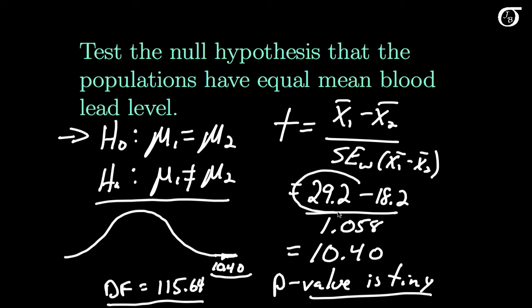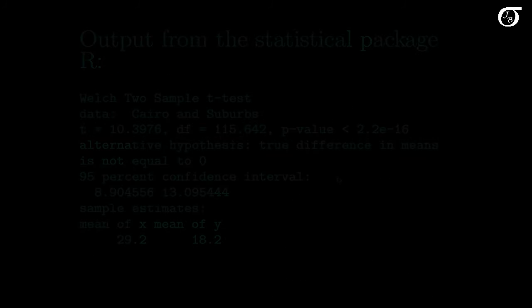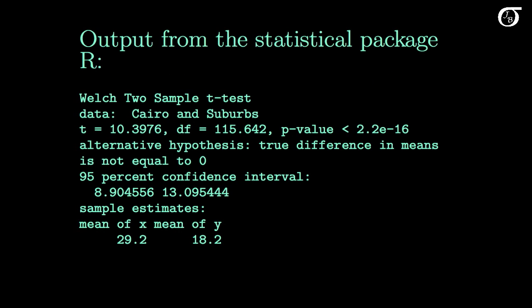So it looks like there is a real difference: the Cairo traffic officers have a greater population mean blood lead level than those from the suburbs. As I've said before, this is typically best done using a computer — let the computer do all the calculations and let us focus on the proper interpretation of the results.